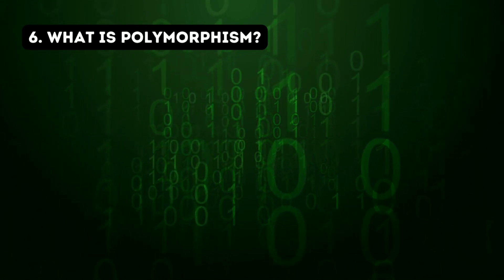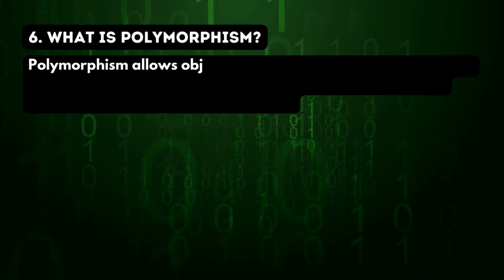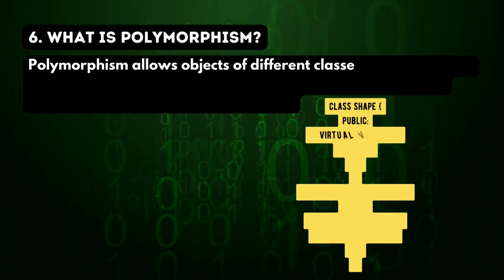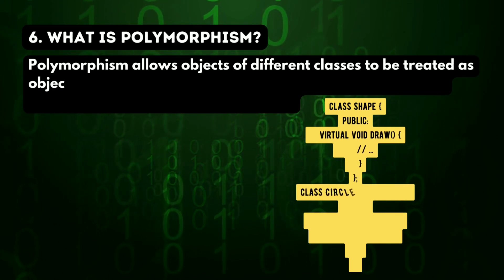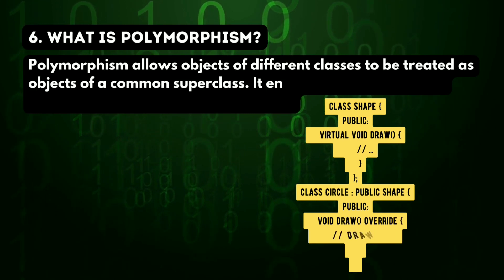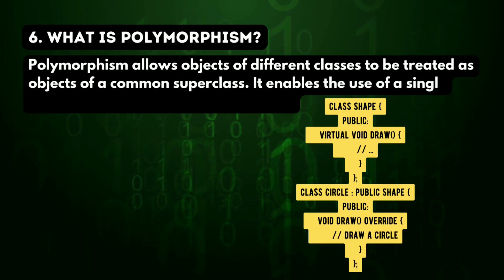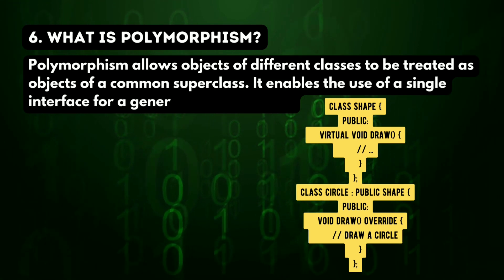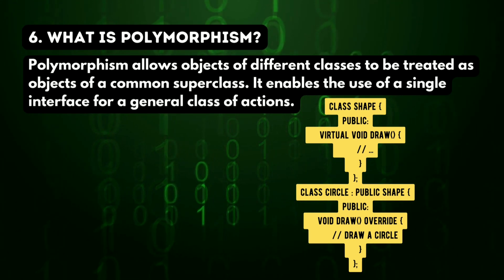Sixth question: what is polymorphism? Polymorphism allows objects of different classes to be treated as objects of a common superclass. It enables the use of a single interface for a general class of actions.